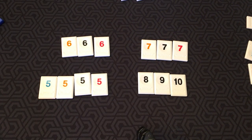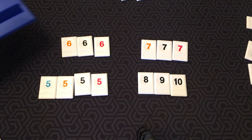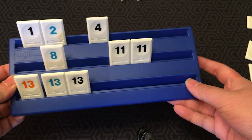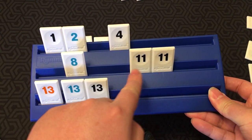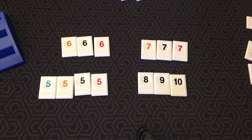Now after a player has cleared their rack and called Rummikub, the other players add up the values of the tiles they are holding on their racks as a negative figure. So let's say these were the tiles I had left. The winner of the game receives a positive score equal to the total of all the other players' points.